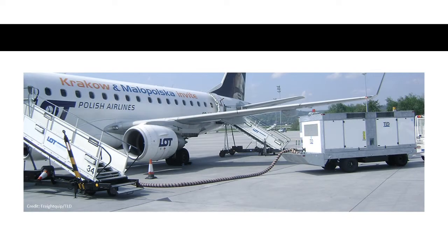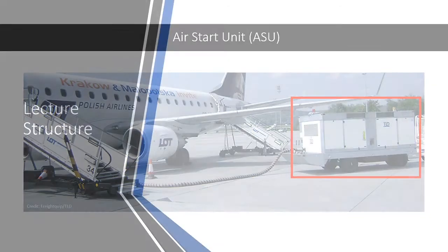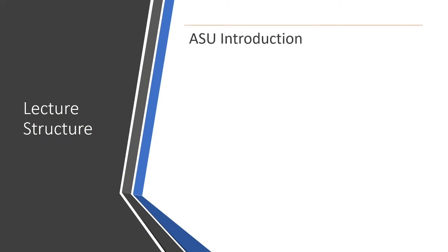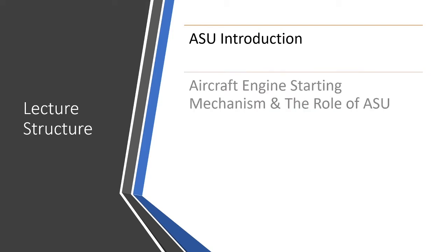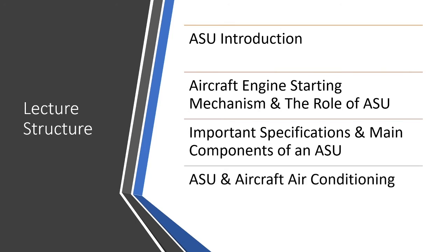We are going to talk about the ground support machine responsible for starting an aircraft engine. It is called an Air Start Unit, or ASU for short. We will begin with introducing the ASU, look at an aircraft engine's starting mechanism and the role ASU plays, discuss its main components and specifications, and conclude with how ASU can be used for running onboard air conditioning on an aircraft.